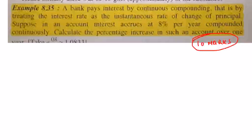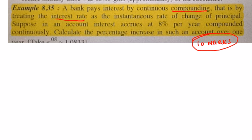Example 8.35 is a very interesting Denmark question. It says that a bank is paying interest, basically compound interest, and how it does that is by treating the interest rate as the instantaneous rate of change of principal.